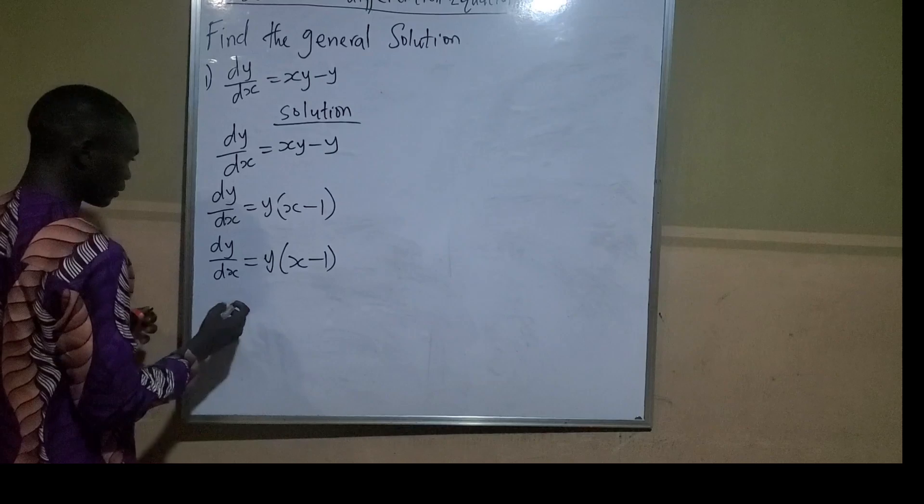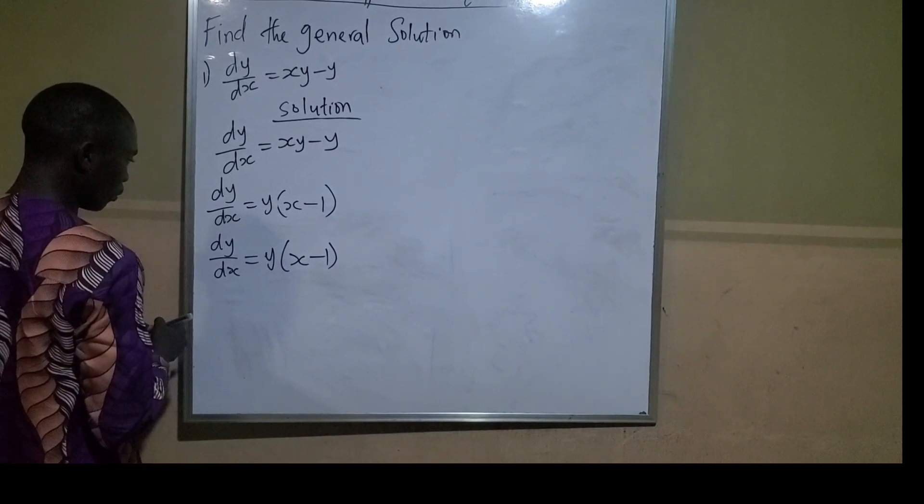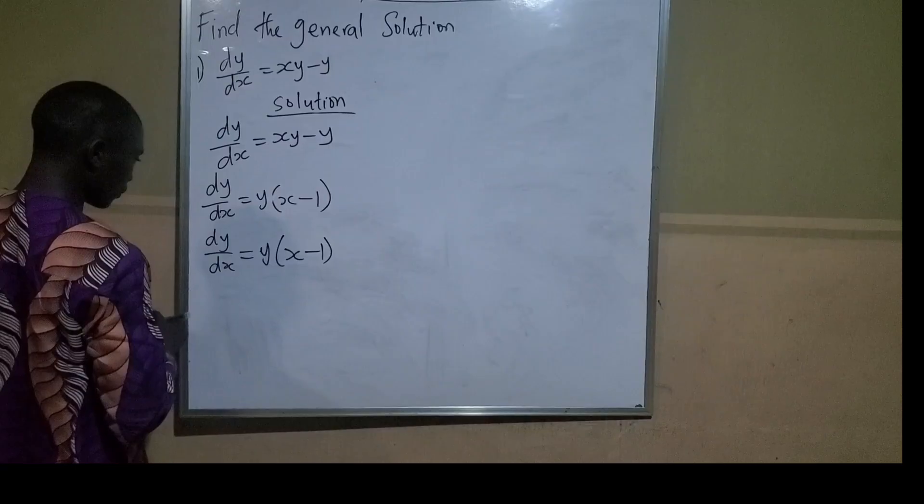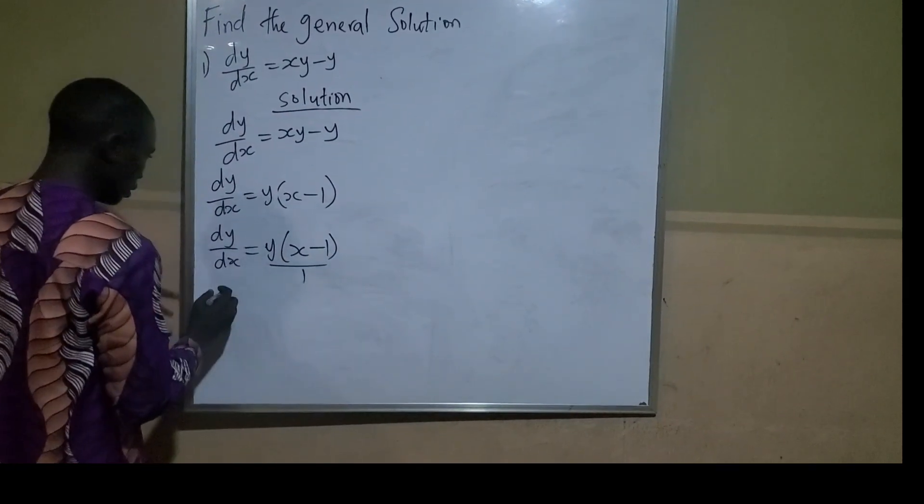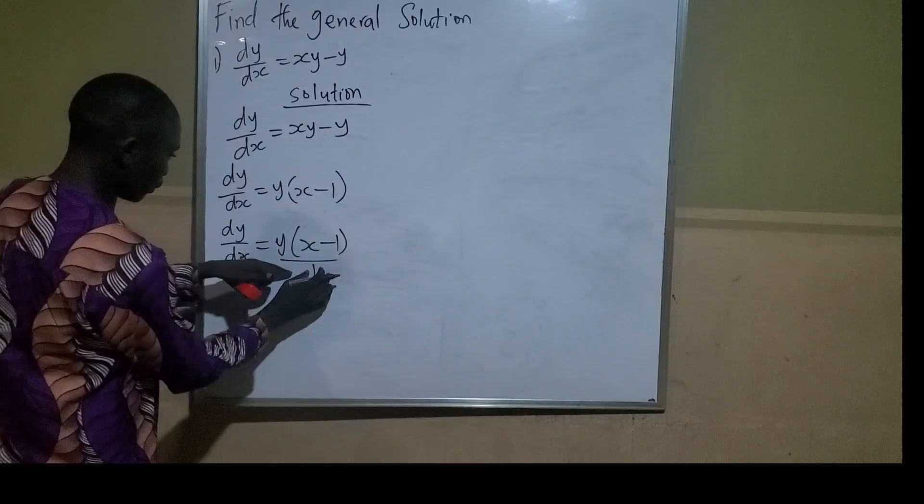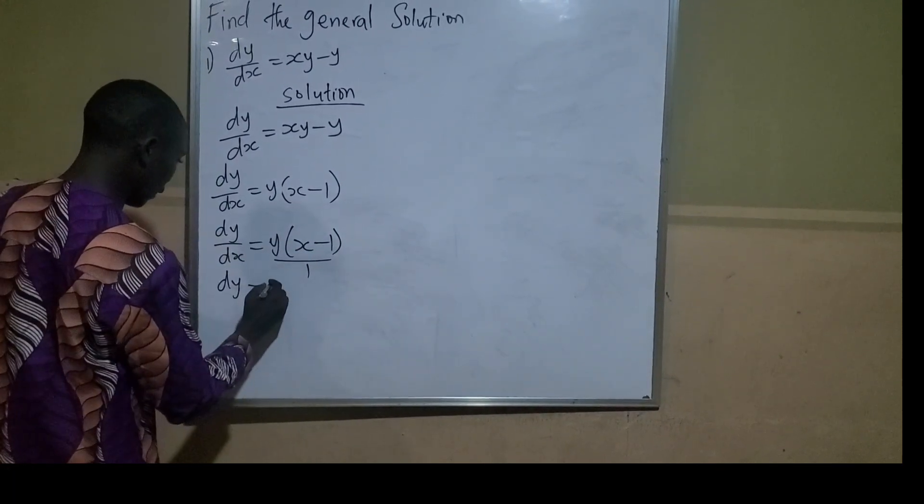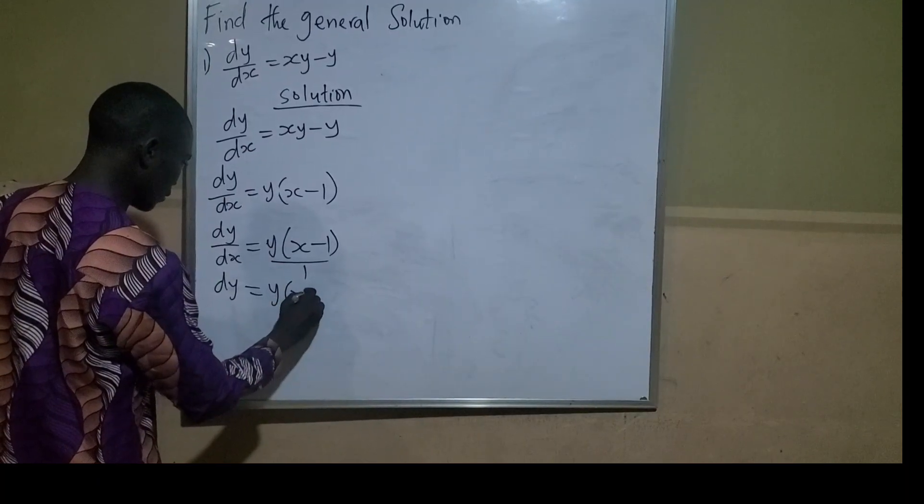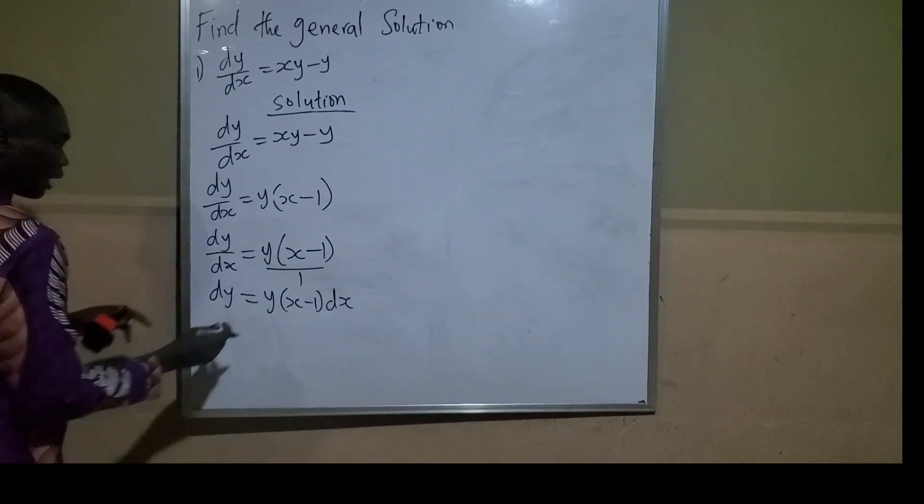Now, for me to do that, I will need to cross multiply first. So this dy times 1 gives me dy, and we multiply the other side to get y(x - 1)dx.